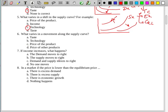Six: what varies in a movement along the supply curve? If you remember, in the demand movement along, the price is the correct answer. And in this situation, it's the same. Movement along the curves, demand or supply, it's only the variability of the price of the product.